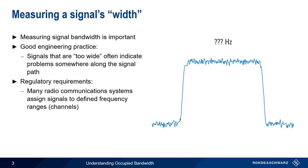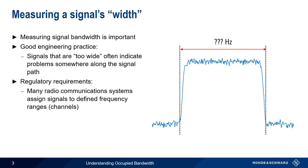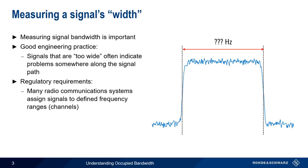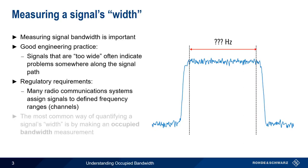But how do we measure a signal's width? How do we choose the start and stop frequencies? Do we measure it using these limits? How about these? Or maybe even these? Fortunately, there's a very common and well-accepted way of quantifying a signal's width, and this method is referred to as occupied bandwidth.